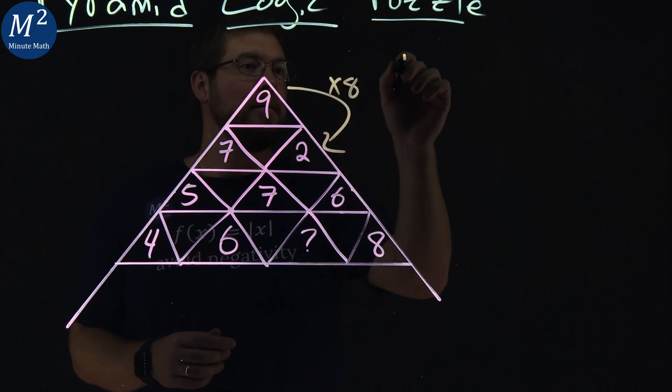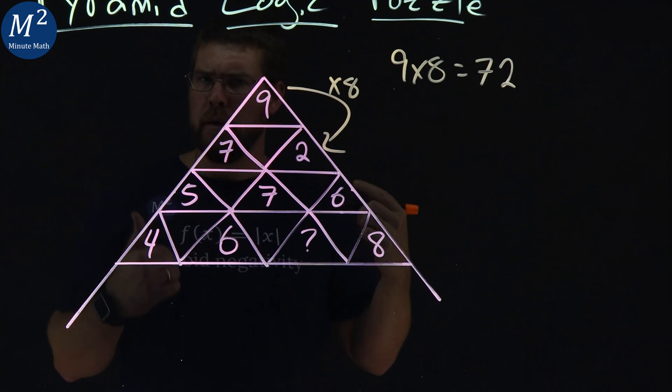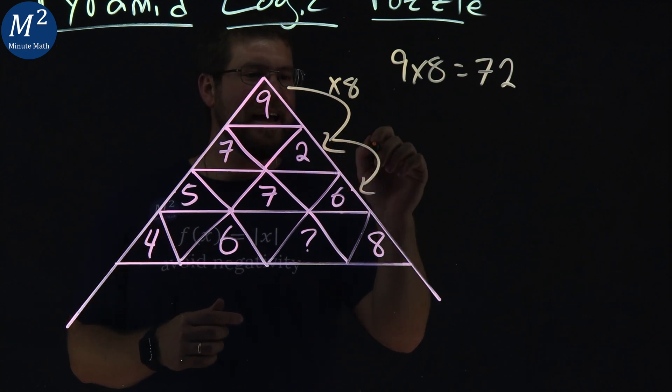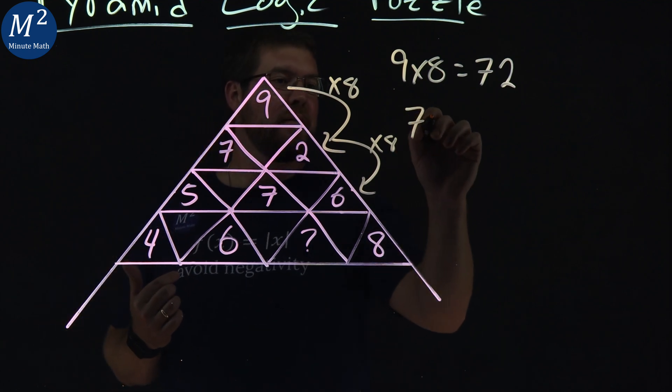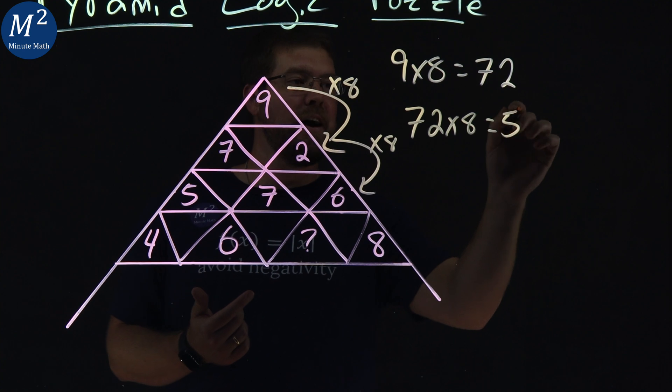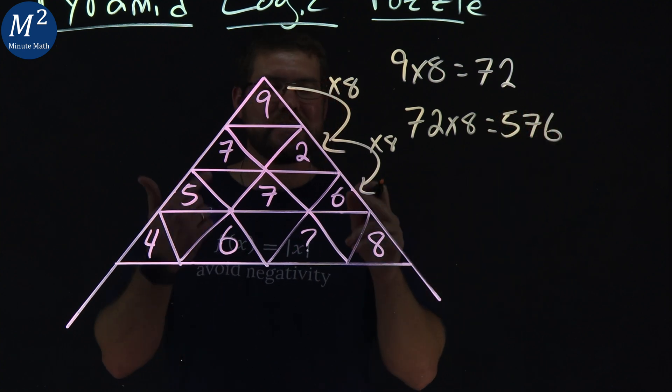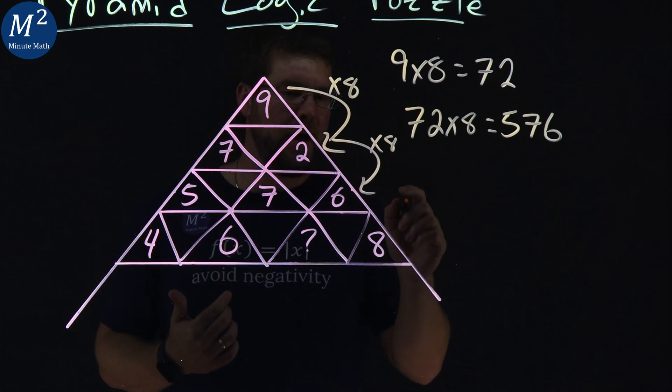9 times 8 equals 72. Does the pattern hold? Let's do it again here: times 8. 72 times 8 does in fact equal 576. All right, so let's just keep that pattern going.